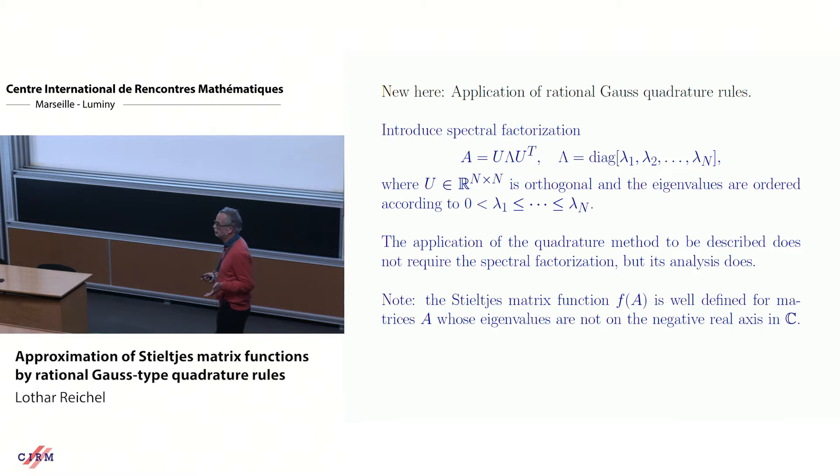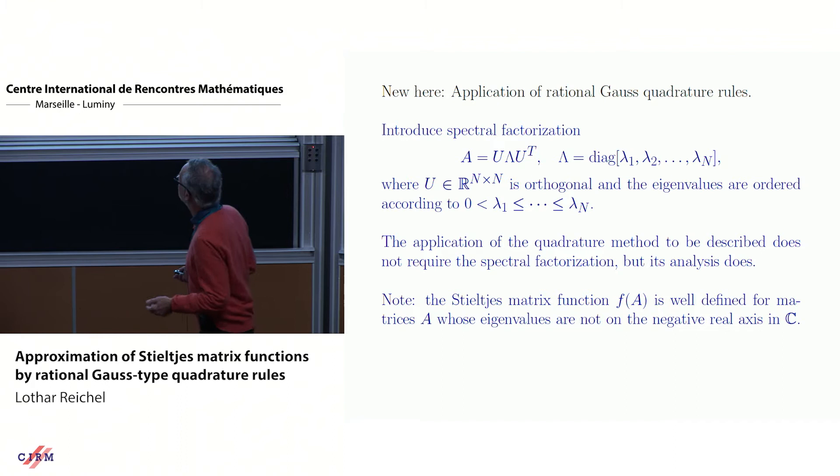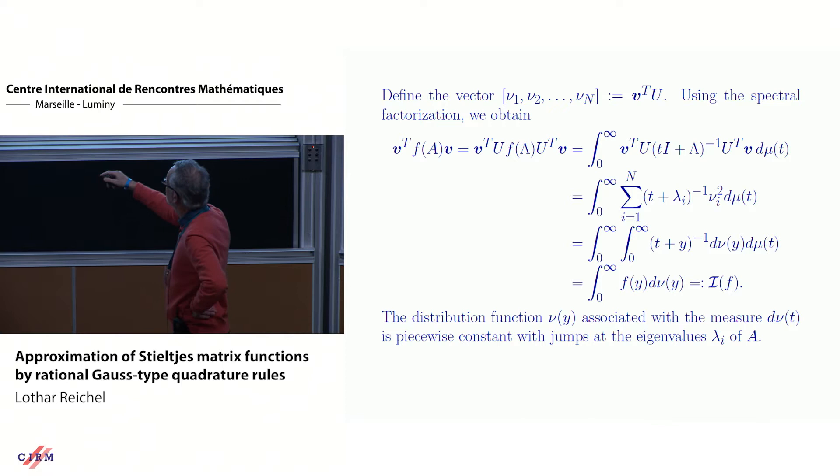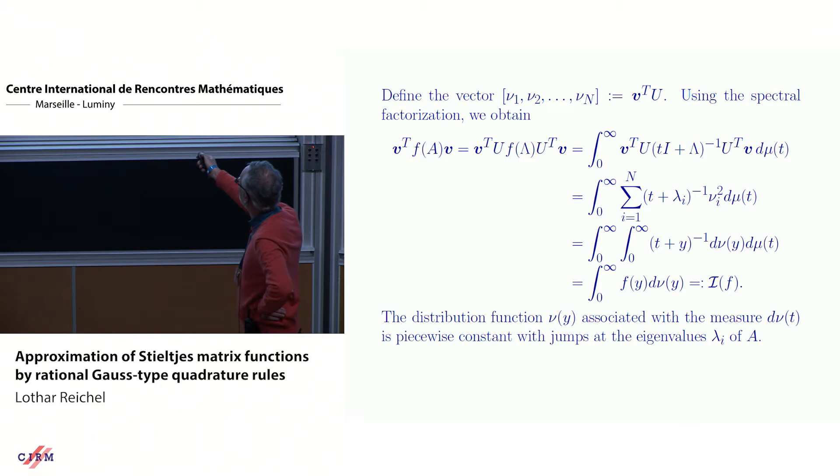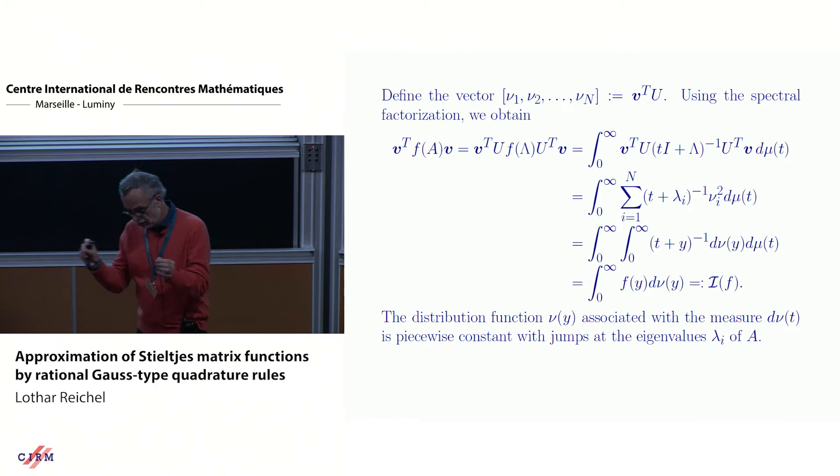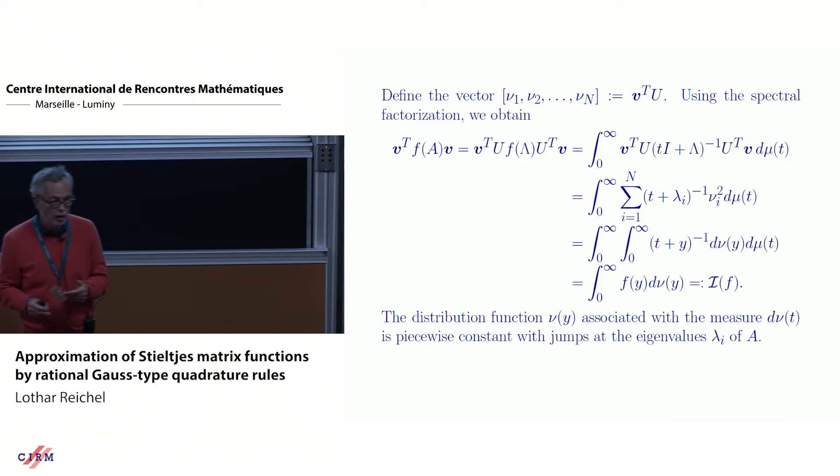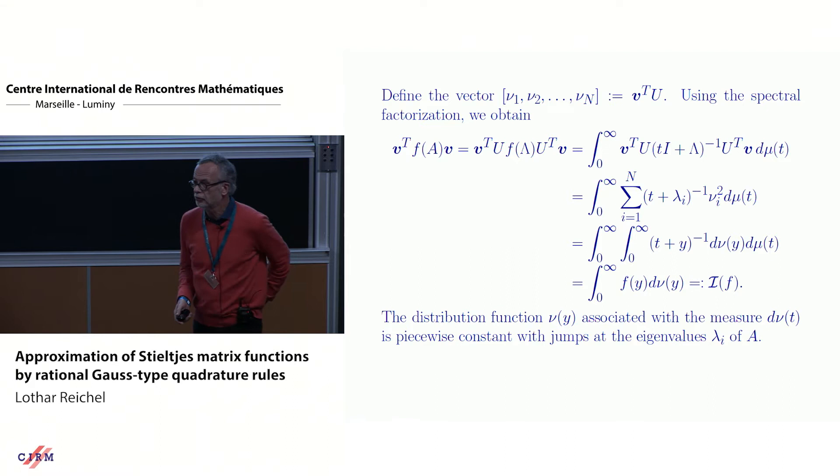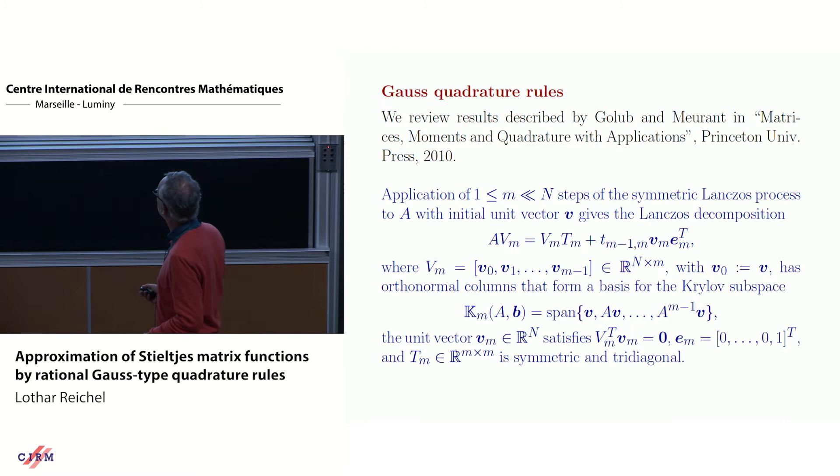So we will start here with the spectral factorization. Not that we need to compute it in the end, but it tells us what's going on. The eigenvalues are lambda one through lambda n, and they're all positive. We write this expression of v transpose f of A v. We plug in the spectral factorization, and there is a new measure showing up here, the nu. That measure comes from the matrix and the vector v. So the corresponding distribution function can be chosen to be a piecewise constant function with jumps at the eigenvalues of A.